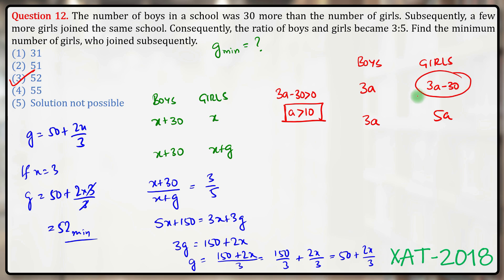Keeping that in mind, let us find the number of girls who joined. So let's say from this value, number of girls who joined was g. So 3a minus 30 plus g equals 5a, or g equals 2a plus 30.